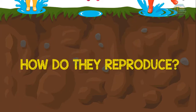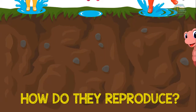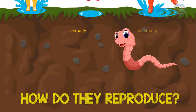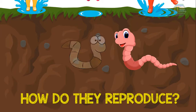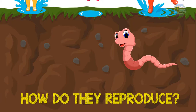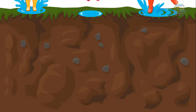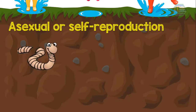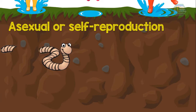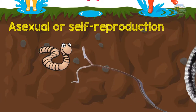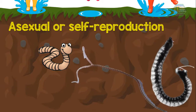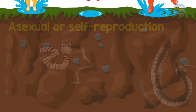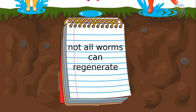So how do they reproduce? Depending upon the species, annelids can reproduce both sexually and asexually — that means they sometimes find a partner, or sometimes they do it alone. In asexual reproduction, the posterior part of their body breaks off and forms a new individual. Lumbriculus and Aulophorus, for example, are known to reproduce by the body breaking into fragments. Note that not all worms can regenerate.